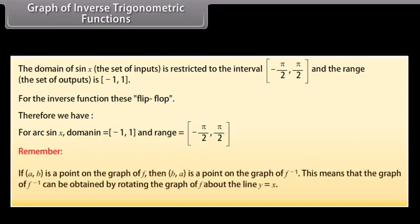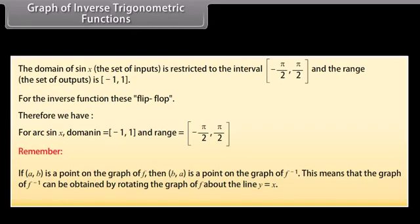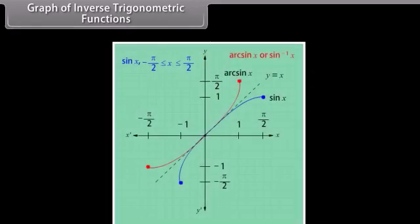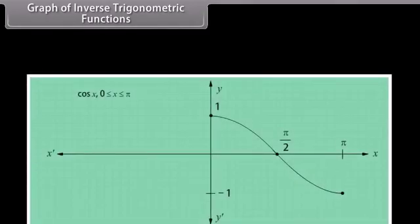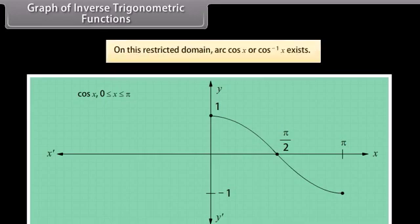Remember that if (a, b) is a point on the graph of f, then (b, a) is a point on the graph of f⁻¹. This means the graph of f⁻¹ can be obtained by rotating the graph of f about the line y = x. Using this idea and by plotting some points, we see the graph of arc sin x. The derivations of the graphs of arc cos x and arc tan x are similar — in both instances, intervals must be restricted. For arc cos x, we use the restricted domain and arc cos x exists.